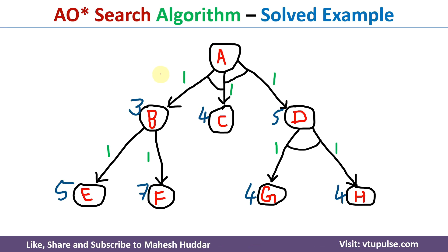In this case, we have been given the following AND-OR graph where A is the root node. We need to find the optimal value of this particular root node as well as the optimal path. Now, if I want to solve the root node, we need to identify the possible paths here.